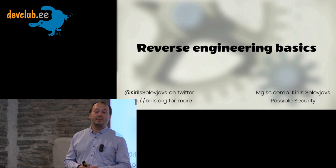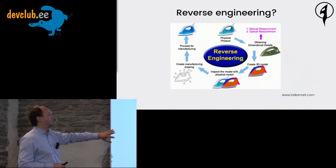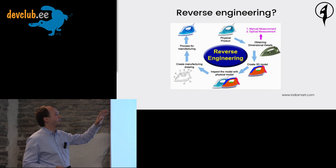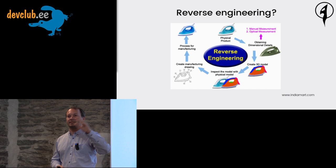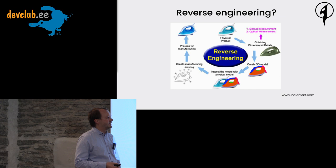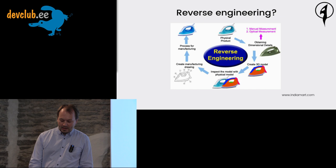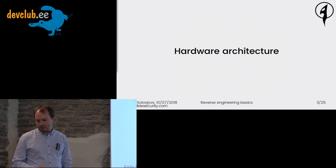Let's take a look at reverse engineering. This is the general principle — I actually took that from IndiaMART, which is kind of an eBay for services in India. Some companies advertise this service: you can buy it, take an item, and they will reverse engineer it for you and send it to production so you can actually make it. This general reverse engineering process applies to any kind of thing — physical things, software, and so on.